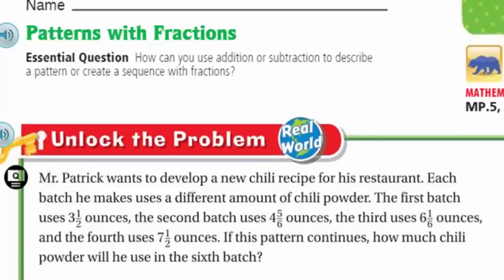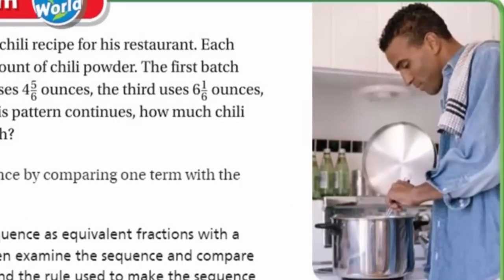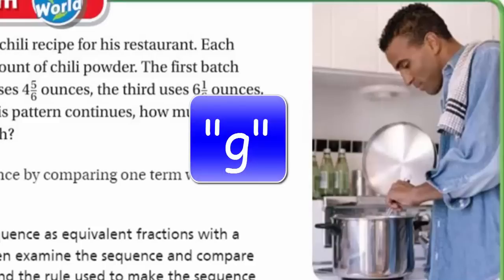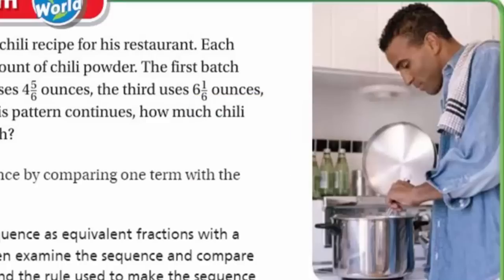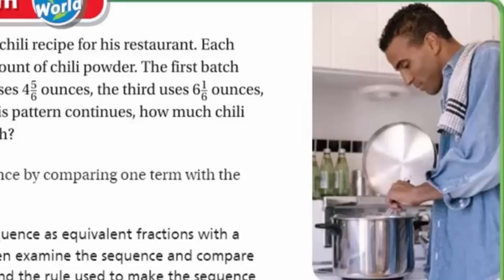Each batch he makes uses a different amount of chili powder. The first batch uses 3½ ounces. The second batch uses 4⅚ ounces. The third uses 6⅙ ounces. And the fourth uses 7½ ounces. If this pattern continues, how much chili powder will he use in the sixth batch? Look at his focus on his boiling pot. You can find the pattern in a sequence by comparing one term with the next term.